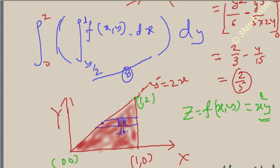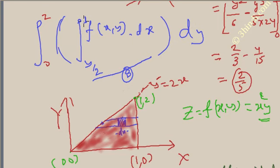The important point is: first find out the range, then plot a strip and see what is constant. If you plot a strip in the x direction, y is constant, so integrate with respect to x first and treat y as constant, and find the range. Once you get the function with respect to y, integrate it using the range from the graph. In this way you can calculate the double integral of any function.